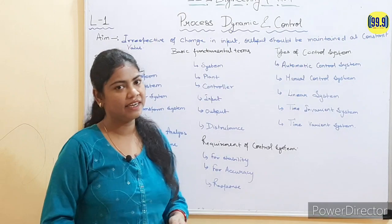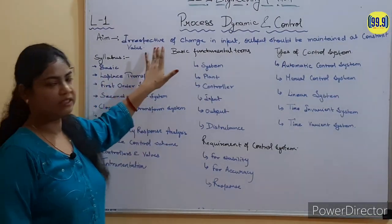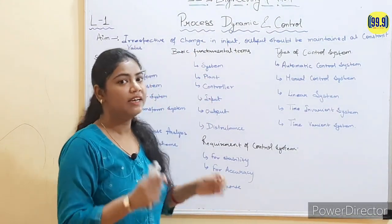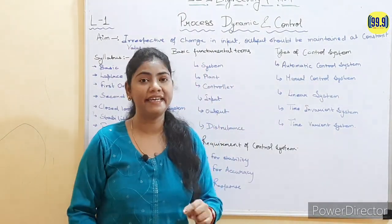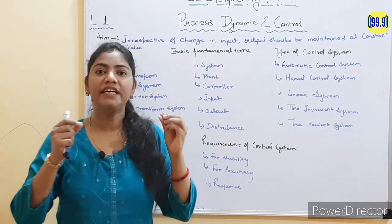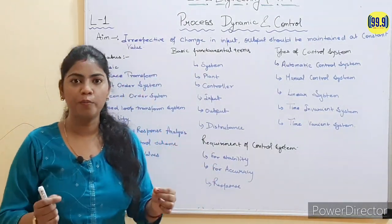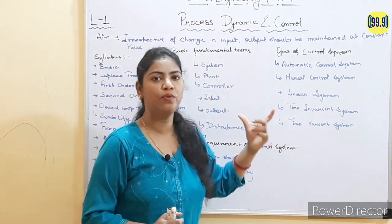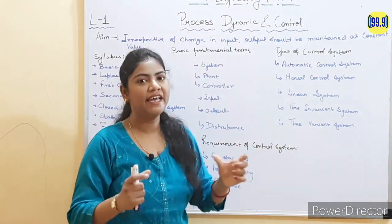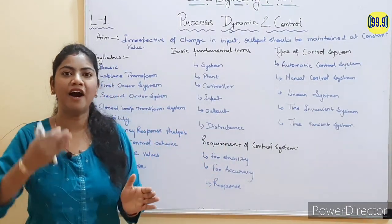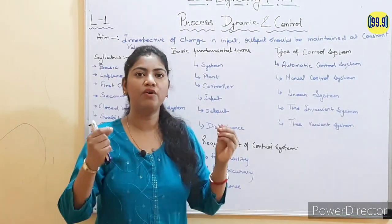Now, what is the aim of this subject? The aim of this subject is that irrespective of any change in input, the output should be maintained constant. This means there will be changes in input, but we need to keep the output at a constant value. So our aim is to control the output — the response that we get should be a constant value.